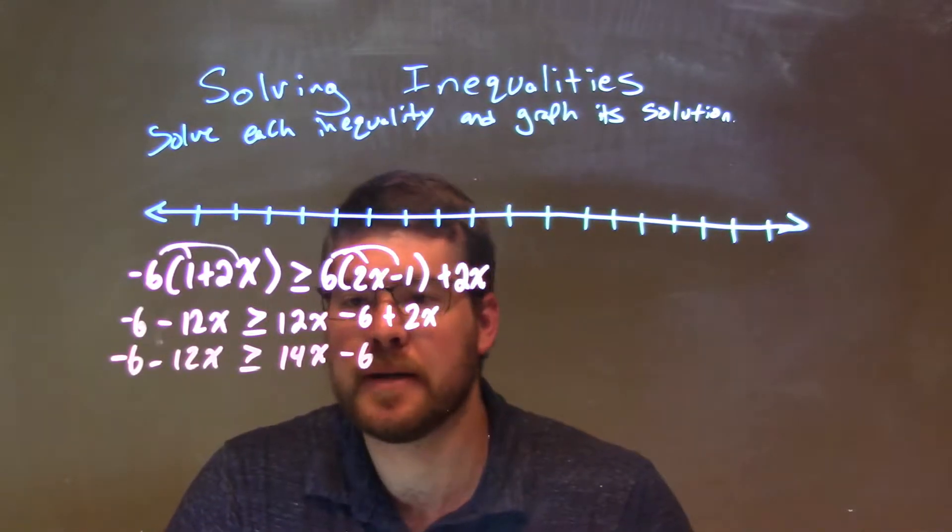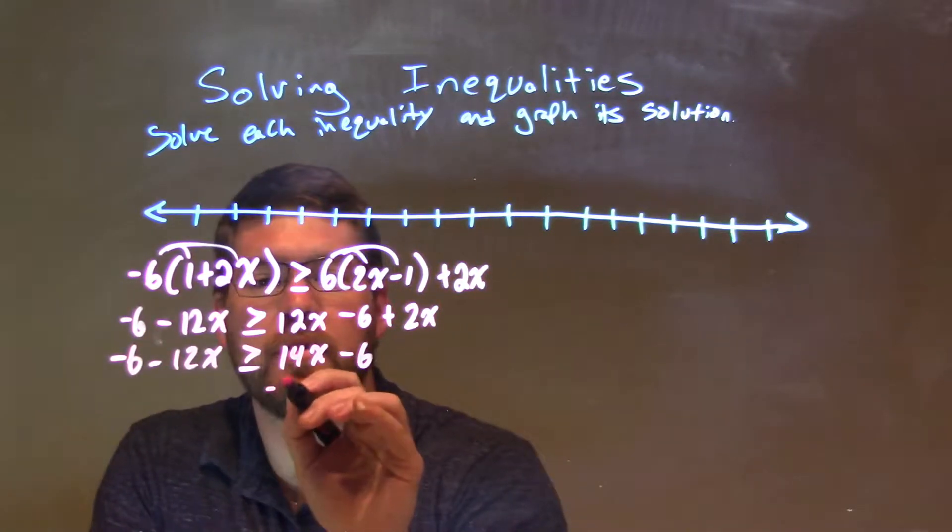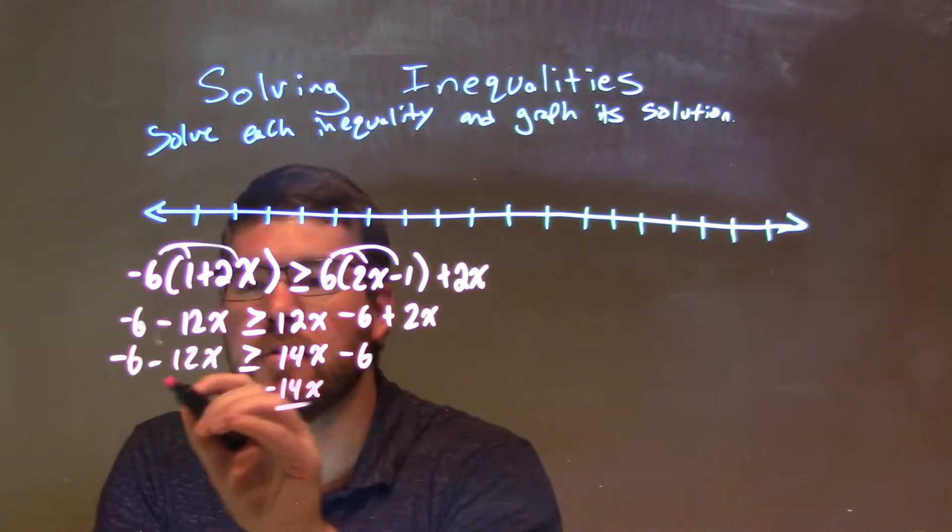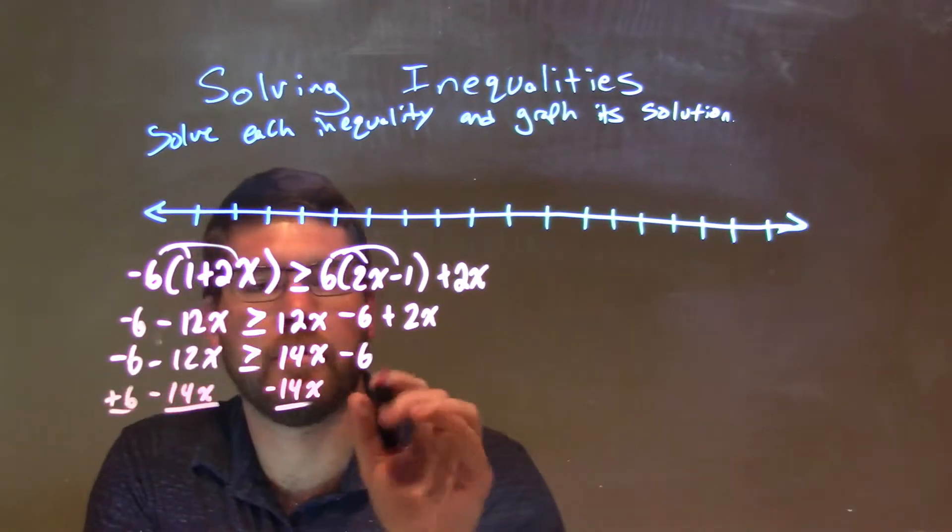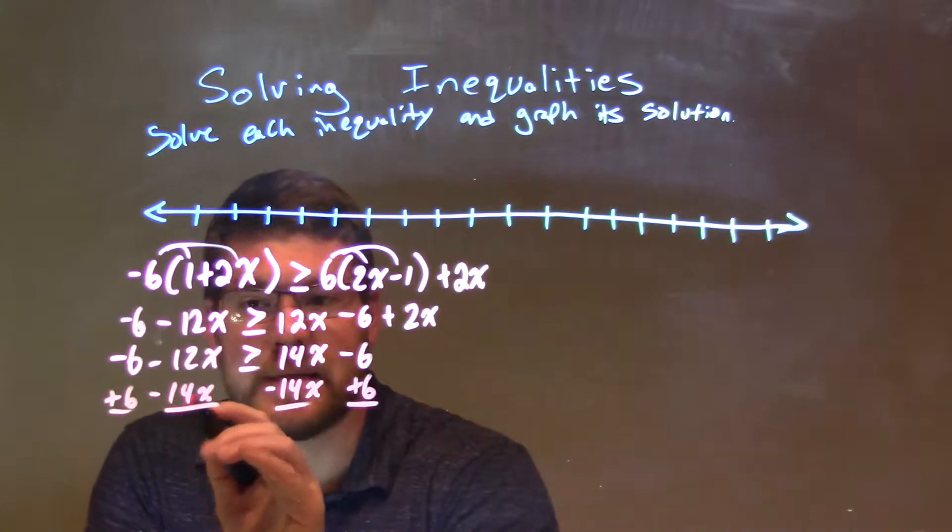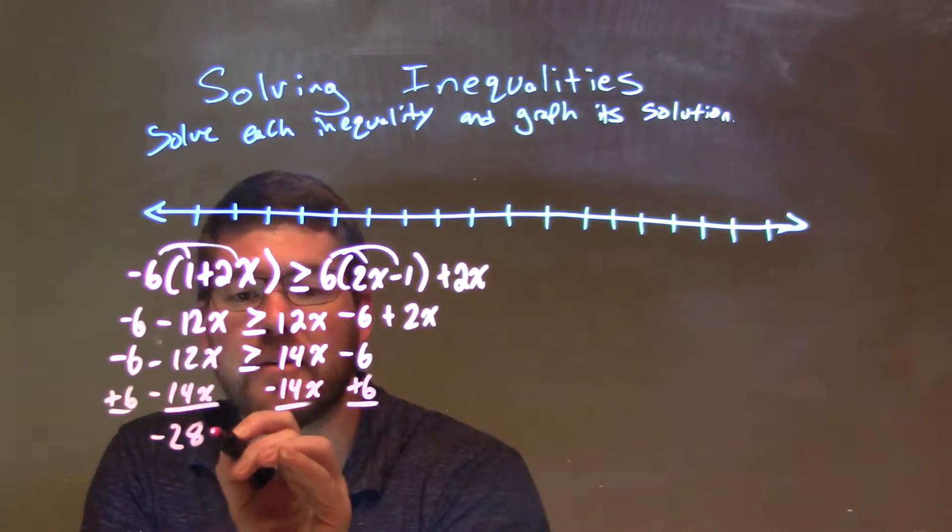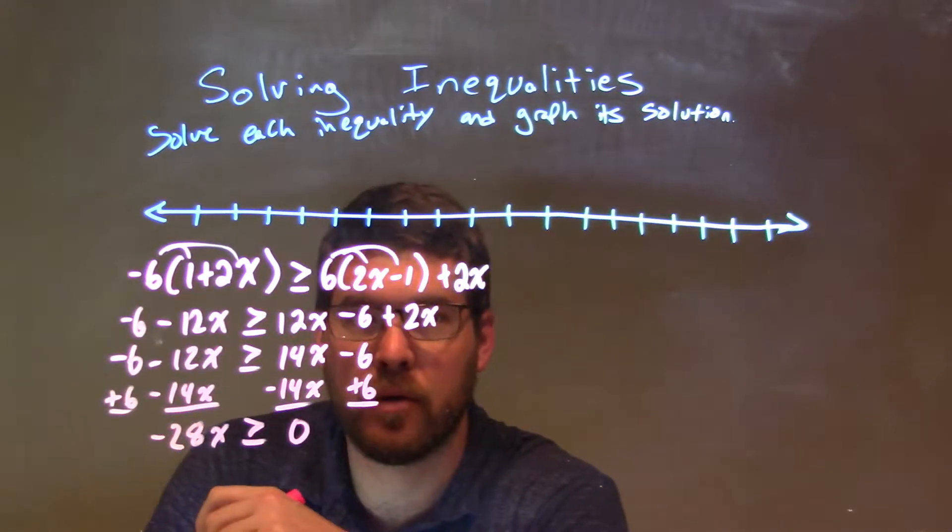Let's bring our letters together and the numbers together and put the letters to the left. Let's subtract a 14x to both sides, and I'm going to add a 6 to both sides. Negative 12x minus 14x is negative 28x, and that's greater than or equal to, well, negative 6 plus 6 is 0.